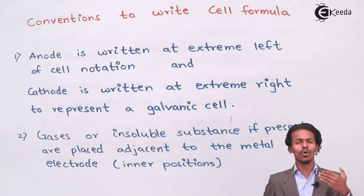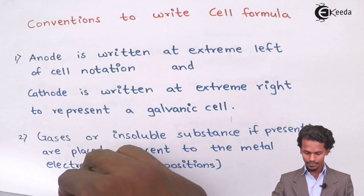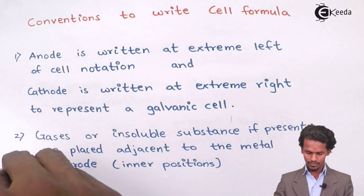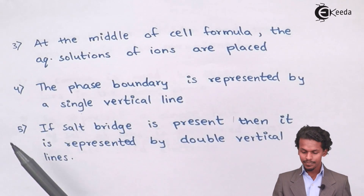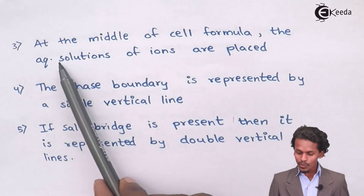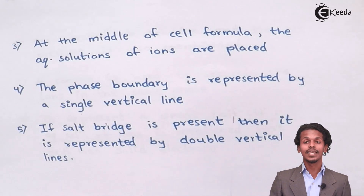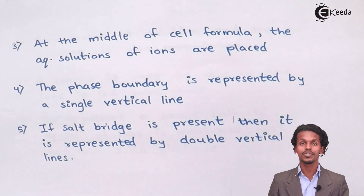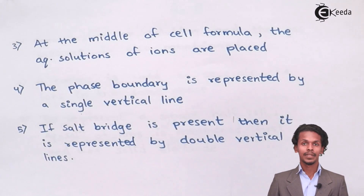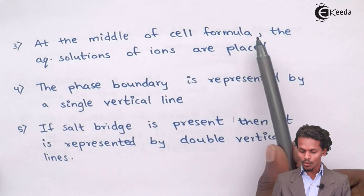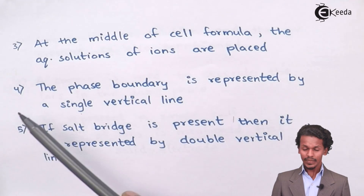Let us first see all the rules and conventions, and then we can understand them better. The third point is that at the middle of the cell formula, the aqueous solution of ions is placed. If the overall cell consists of an aqueous solution, then that aqueous solution should be represented between the anode and cathode in the cell notation.